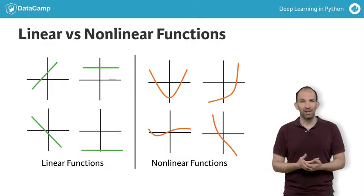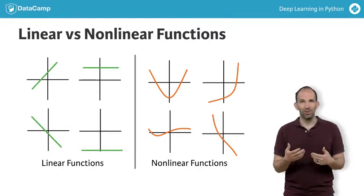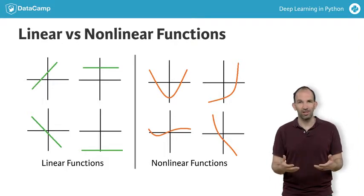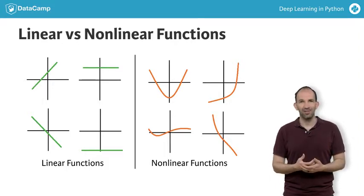We have examples of linear functions, straight lines, on the left and non-linear functions on the right. If the relationships in the data aren't straight line relationships, we will need an activation function that captures non-linearities.